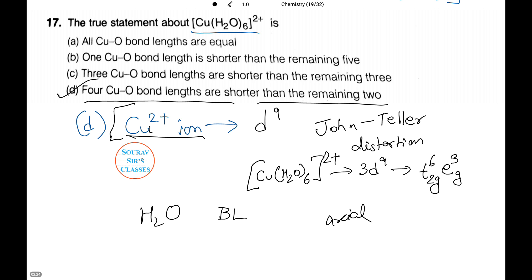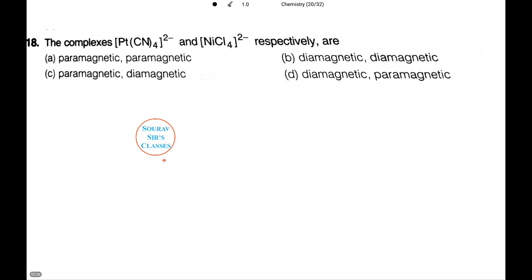Now, let's continue with a different question. We are given two complexes: platinum cyanide ions and nickel chloride ions respectively. We need to find its magnetism. Let's write down the electronic configuration.